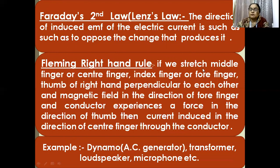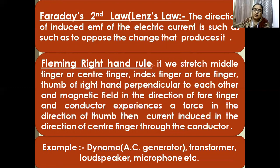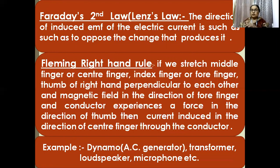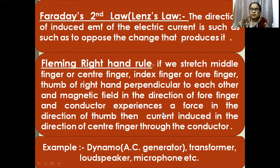Fleming's right-hand rule: if we stretch our middle finger, index finger, and thumb of the right hand perpendicular to each other, with magnetic field in the direction of the forefinger, force in the direction of the thumb, then the current is induced in the direction of the middle finger. The force is given by F = qvb sinθ, where F is perpendicular to the plane of v and B. Dynamo, transformer, loudspeaker, and microphone all work on Fleming's right-hand rule.